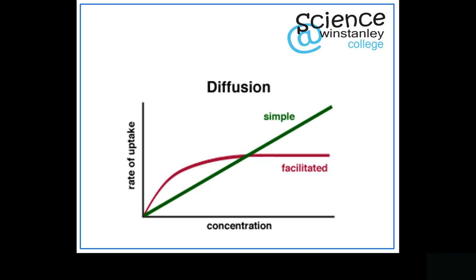The graph has concentration along the bottom and rate of uptake up the side — that's how quickly the molecule is going into the cell. Looking at the green line first, which represents simple diffusion: as the concentration increases, the rate of uptake increases. In simple terms, the more you've got the faster it will go in, and this happens in a pretty straight line. It keeps going up, applying only to non-polar molecules.